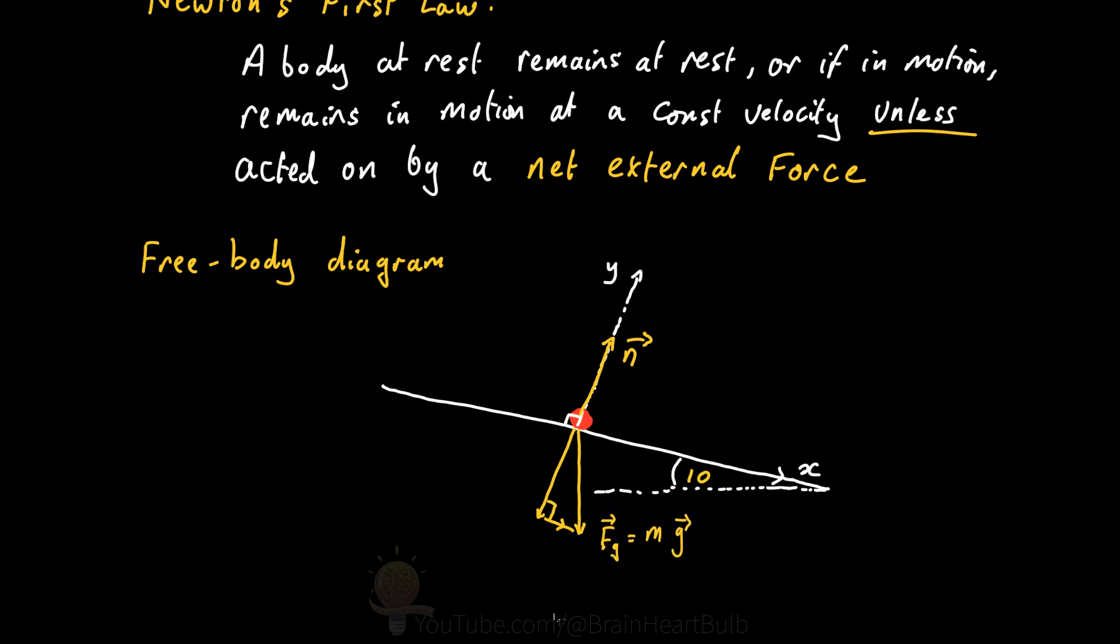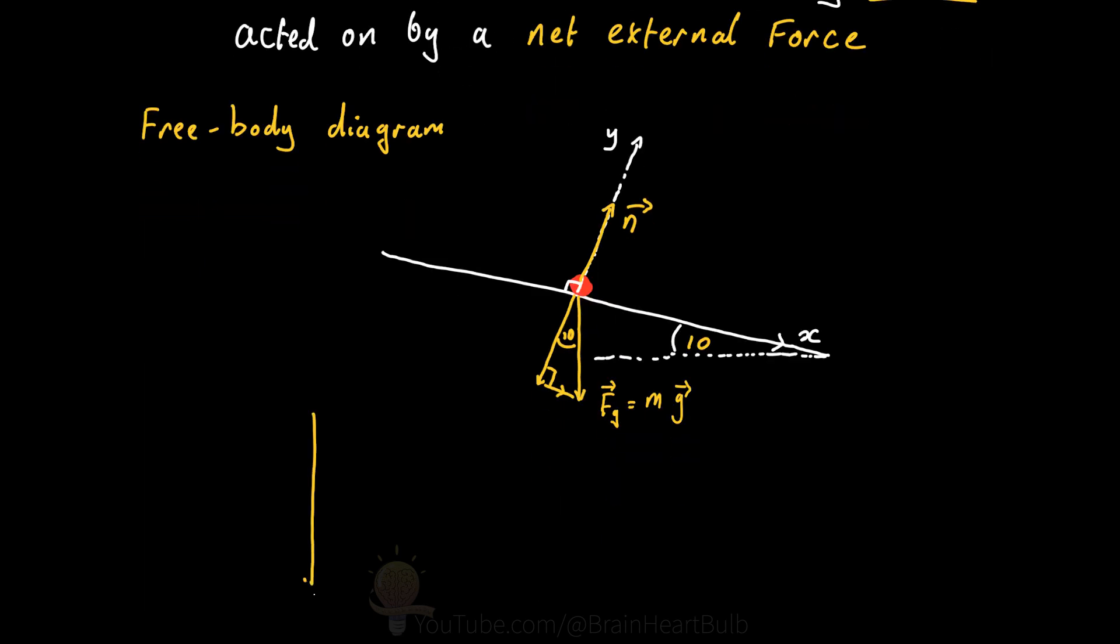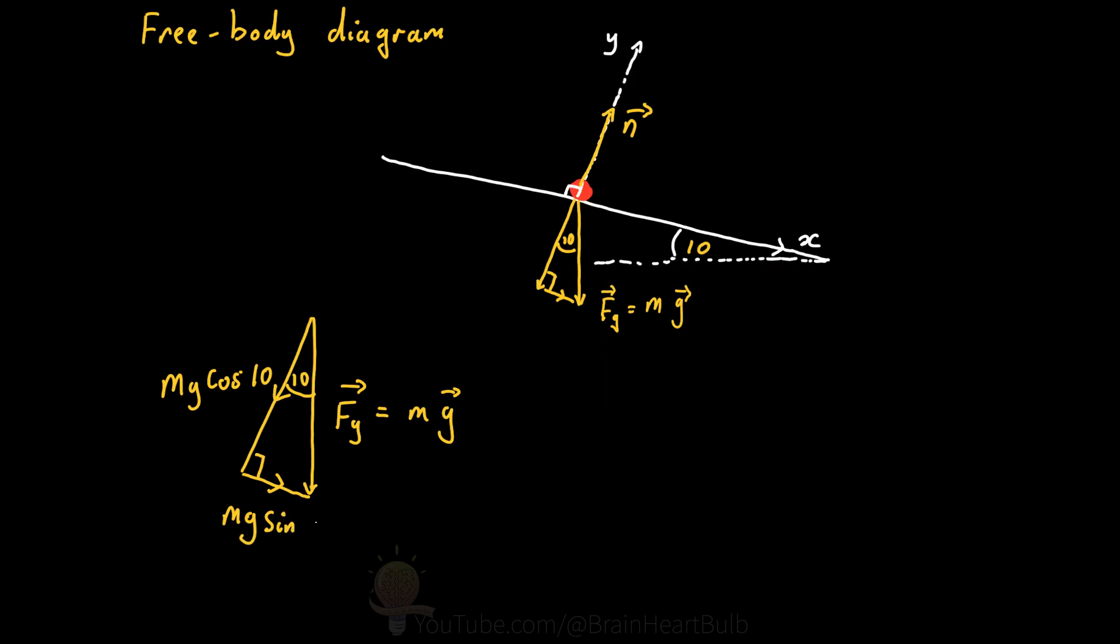So now, we can replace our gravitational force by its x and y-axis, leaving us with this vector diagram, and we can use trigonometry to find the adjacent and opposite force vectors from this triangle.